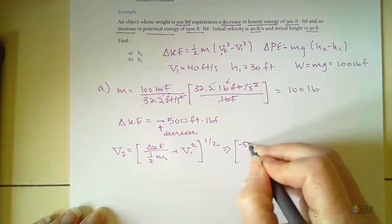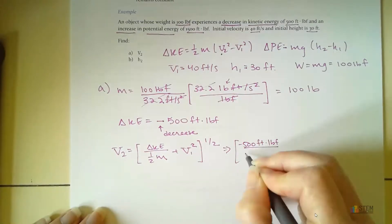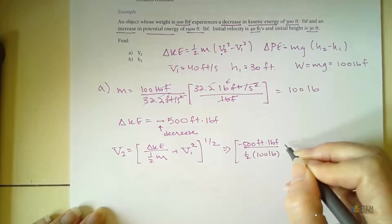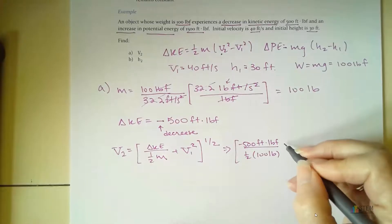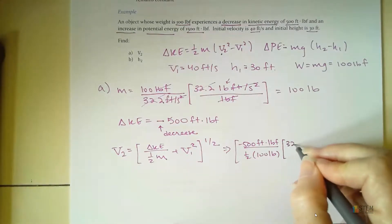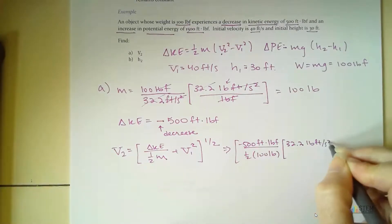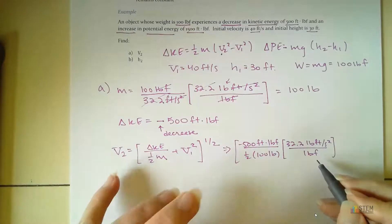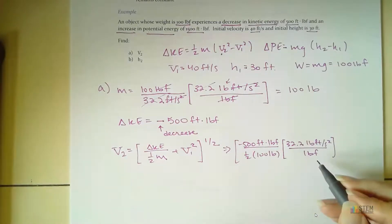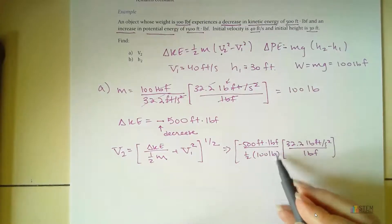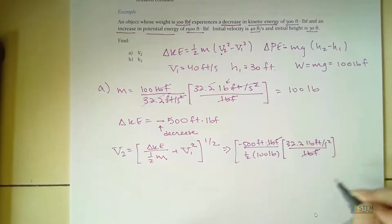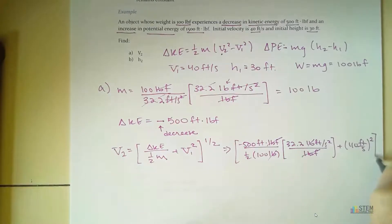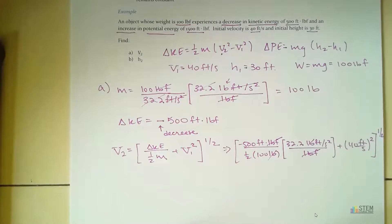So now we need to just plug in our numbers. So we're going to have negative 500 foot-pound force over one-half, 100 pounds. And here we are again. We're going to have to do that conversion again. So 32.2 pound foot-per-second squared per pound force. And we're having to do this because we want units of velocity. So units of velocity in the English system would be feet per second. So we can't just leave these pound force and pounds in here. So let's get rid of those. So notice those go away now. And then let's finish it out with V1 squared. So we'll have plus 40 feet per second squared. And then close that bracket. And then we need to do the square root.